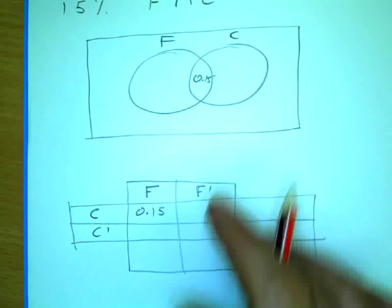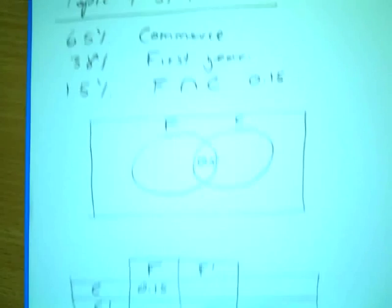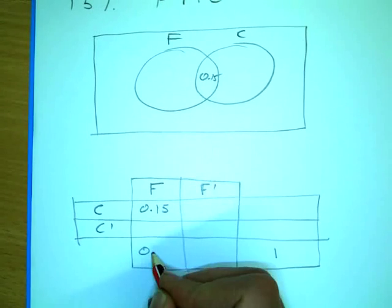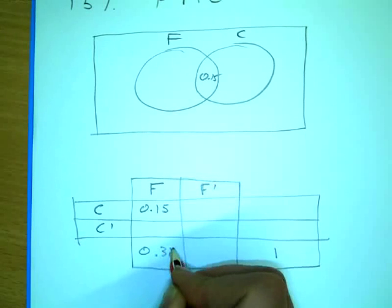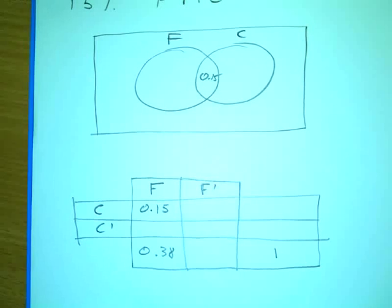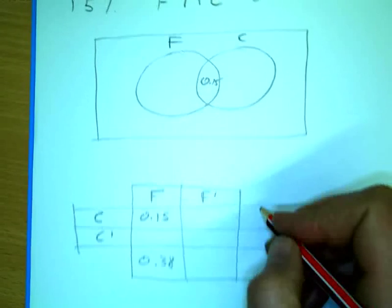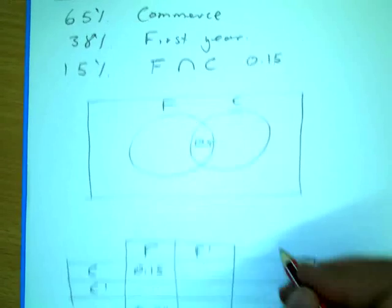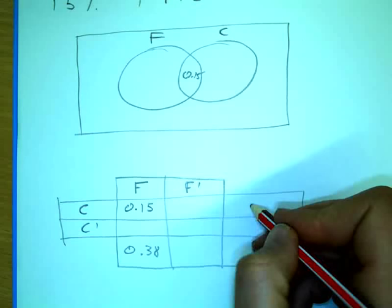Now the other information I already know is that 38% were first years. So I can put 0.38 there, yeah. And what do I also know? I also know that 65% were doing what? Commerce. So what do you reckon I'll put here, row?